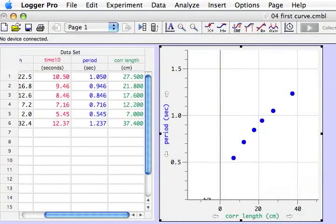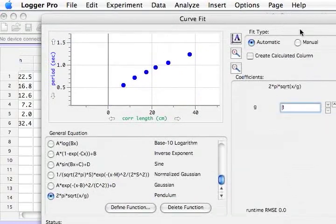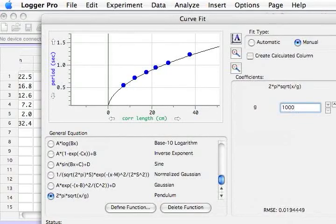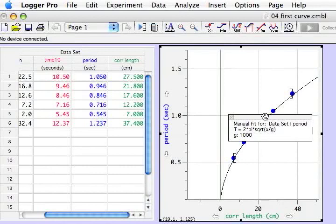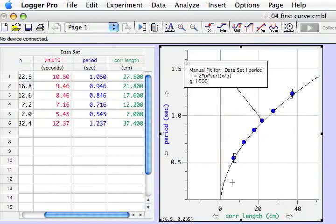We want to put our function back on. I click the Curve Fit button. Click Manual. The Pendulum function is already selected. I want to put in a reasonable value for g, such as 1000. Click OK, and look at that. This time, the curve goes nearly through all the points. If we looked more closely, we could refine the value of g further, but this gives us a good idea that our data analysis is correct.